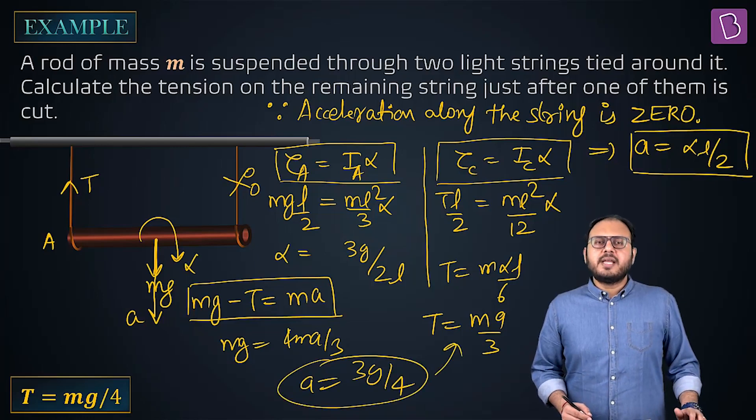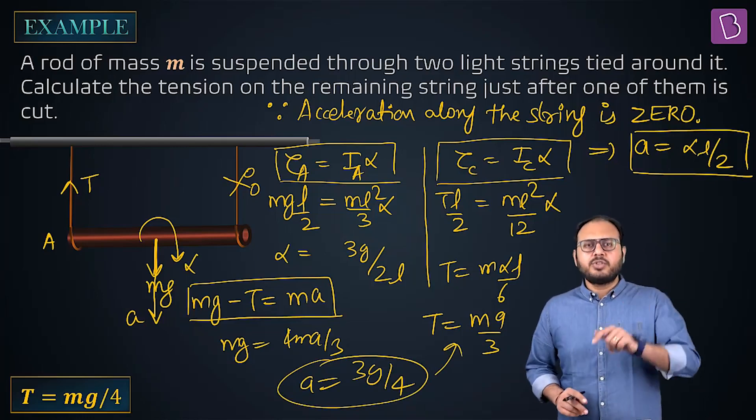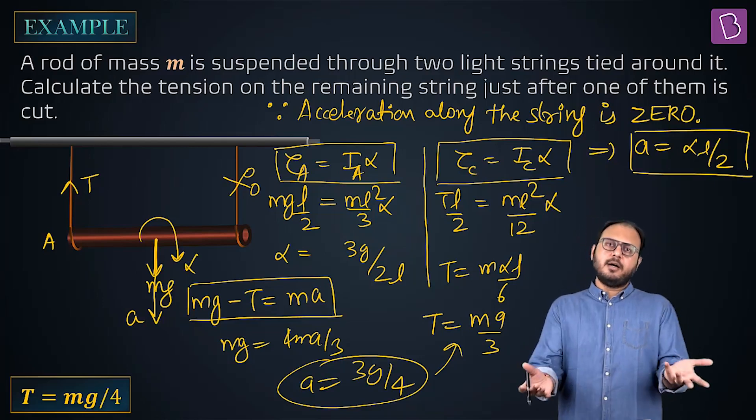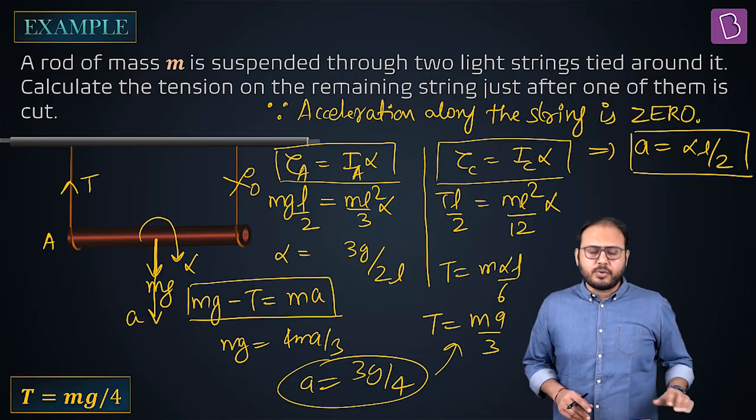Trust me you will get the same answer about both equations. Which equation? About center and about A. And both are correct. Why? Because center, duh, center is the king. But why A? Because A right now is instantaneous axis of rotation.